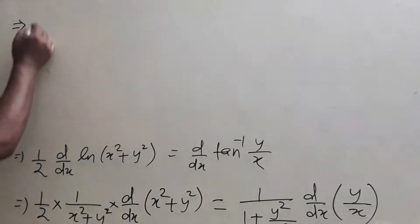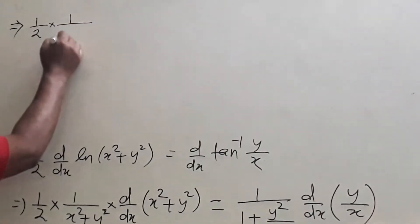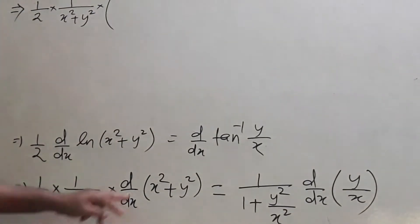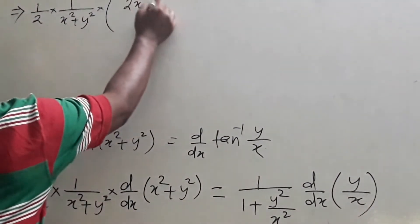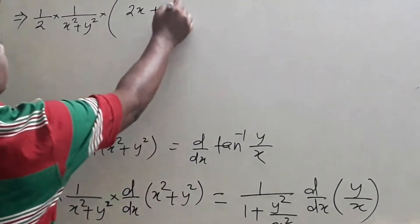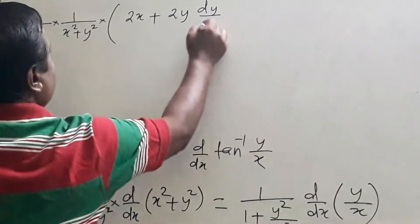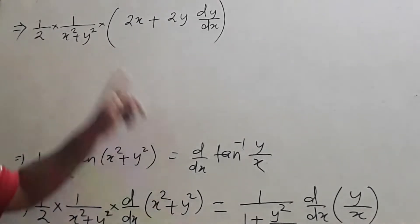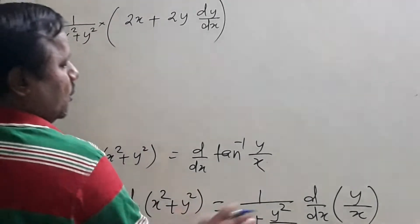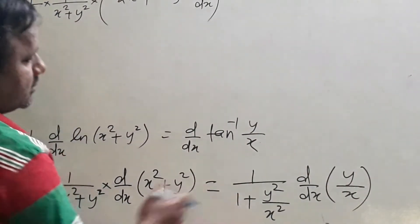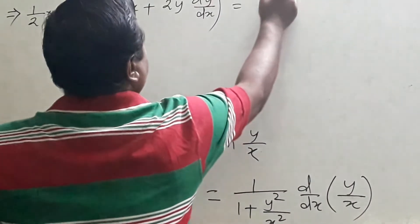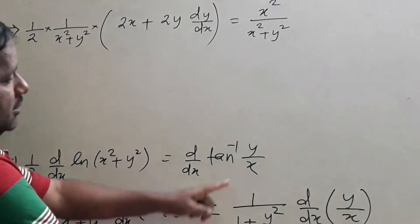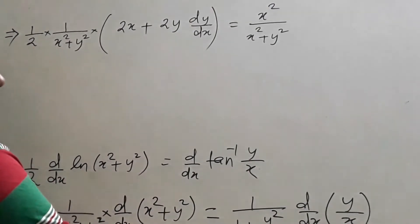Then it is (1/2) · (1/(x² + y²)). The derivative of x² is 2x, and d/dx of y² is 2y · dy/dx. So we get 2x and 2y · dy/dx. Don't take LCM here — multiply x² in the numerator and denominator to simplify. It becomes x² + y². Note that terms will reduce and cancel.